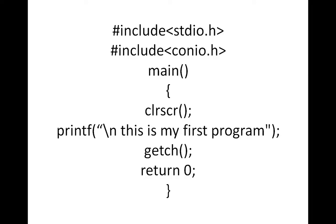This is the first program. In that, we can learn many things. We have to include these two header files, and after that we have to use the main function. After the main function, we have to start the curly braces. The clrscr function clears the screen every time. Printf is used to display text on the screen. Getch waits to see the output. This is return 0, and after that we close the curly braces. Now we will run the same program with the help of Turbo C software.